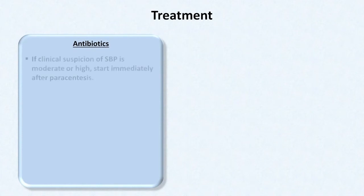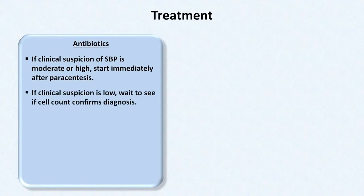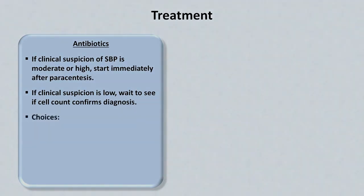So finally, let's move on to discuss treatment. Obviously, the cornerstone of treatment is antibiotics. If the clinical suspicion of SBP is moderate or high, antibiotics should be started immediately after paracentesis. If clinical suspicion is low, wait to see if the cell count confirms or refutes the diagnosis — in most labs, the cell count should take no more than an hour or two.